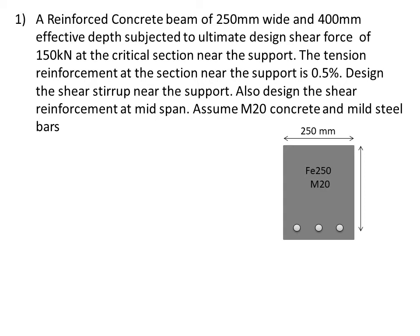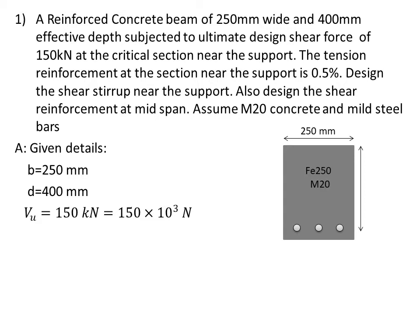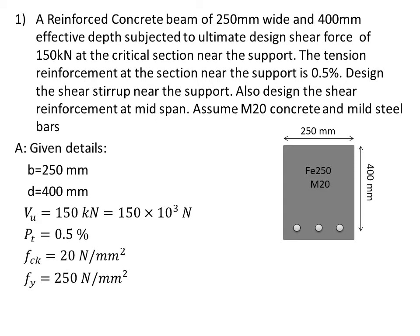We are using Fe 250 mild steel bars with M20 concrete. Writing down the given details: B = 250 mm, D = 400 mm, VU = 150 kilo Newton (converted to 150 × 10³ Newton). PT is directly given as 0.5 percent, so we don't have to calculate it separately. FCK = 20 N/mm² and FY = 250 N/mm².